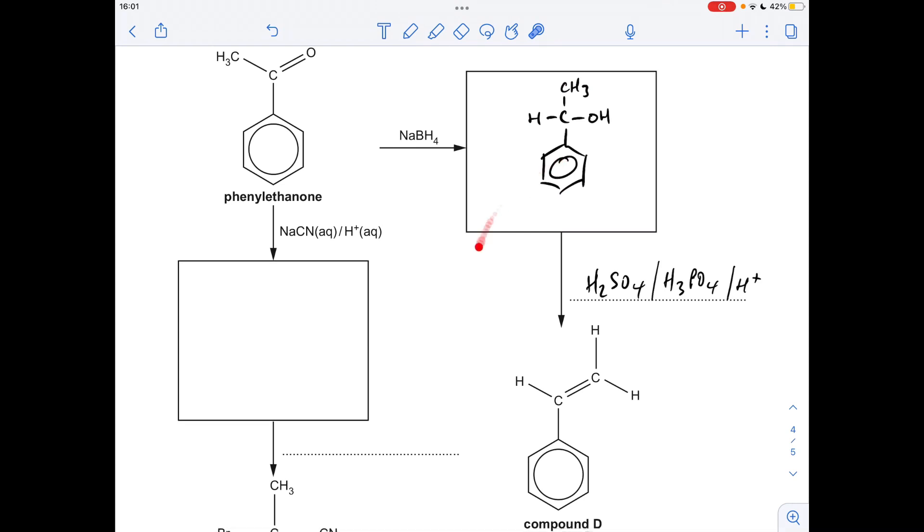And then to turn that into this alkene, we react it with a strong acid basically. So you could either use sulfuric, phosphoric, or you could literally just put H plus.